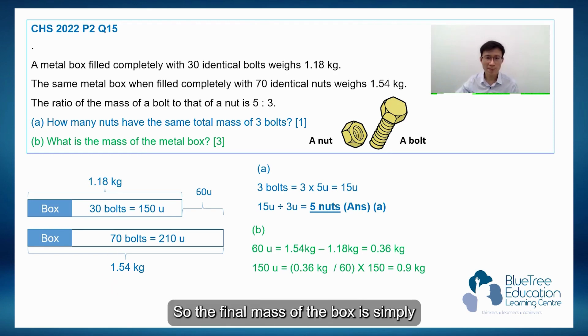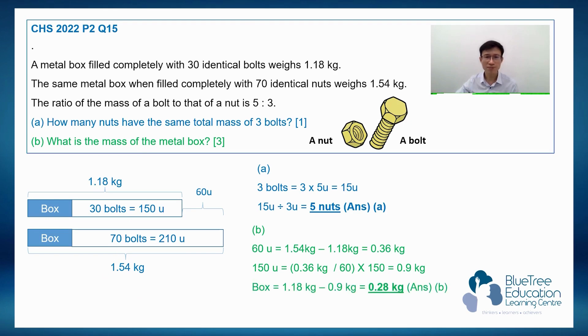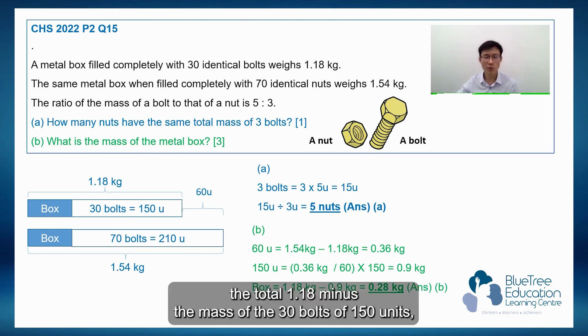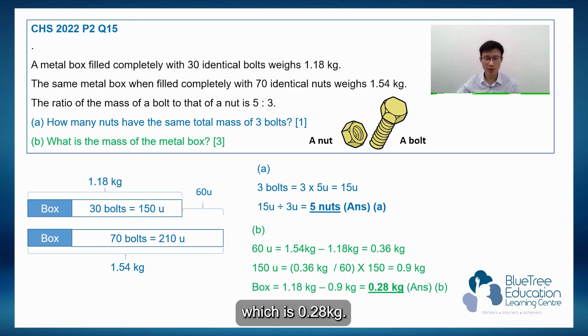So to find the mass of the box is simply the total 1.18 minus the mass of the total bolts of 150 units, which is 0.28 kg.